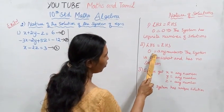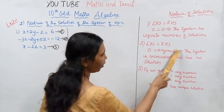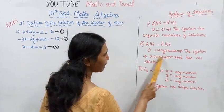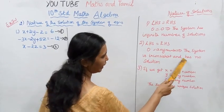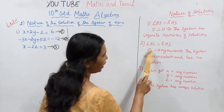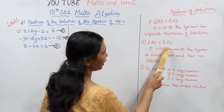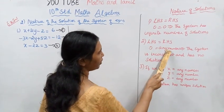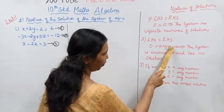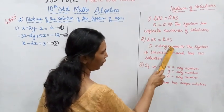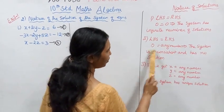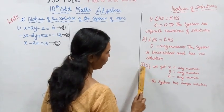If we get 0 equal to any number — for example 0 equal to 7, or 0 equal to minus 1 — that means the system is inconsistent and has no solution.